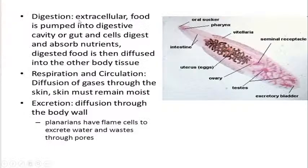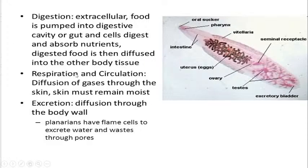Regarding digestion, food is pumped extracellularly into the digestive cavity. You can see oral suckers, pharynx, and intestine in the diagram. They also have uterus with eggs, ovaries, testes, excretory bladder, and seminal receptacles — because they are hermaphrodites, meaning bisexual. Food is digested in the gut cavity and absorbed nutrients diffuse into other body tissues.